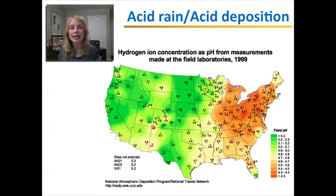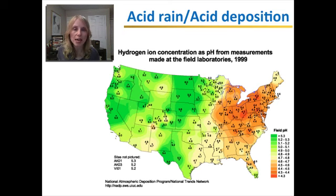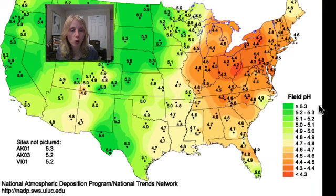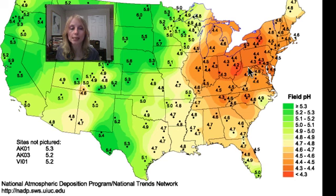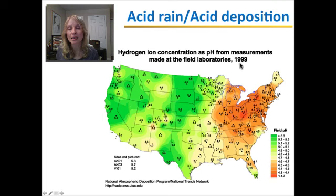Next, I'd like to take a look at acid rain and acid deposition and the causes and consequences of this issue. Here's a map of the United States showing the pH levels of rain across different parts of the country. A neutral pH is 7, and the lower the pH, the more acidic it is. The orange and reddish areas have the lowest pH — the northeast especially is where you get the most acidic rain, because this is where the most industry is. This map is from 1999, and the situation has improved since then.